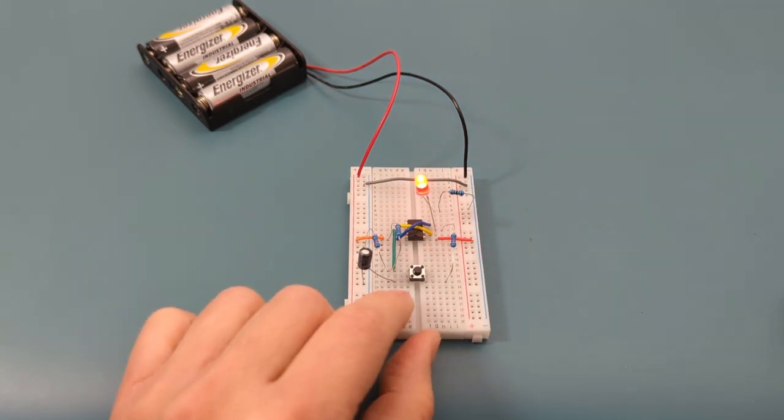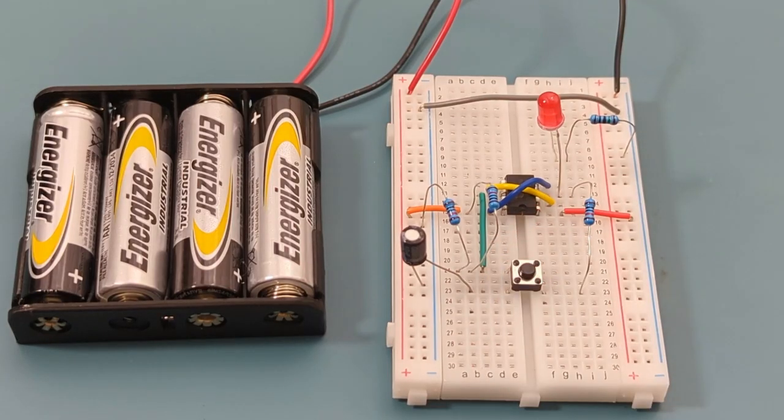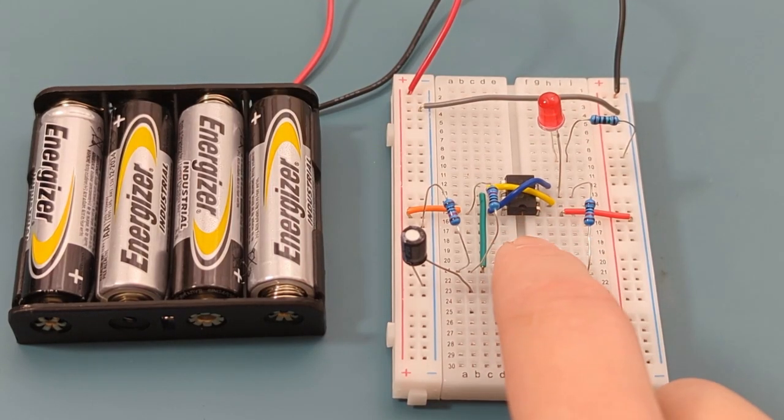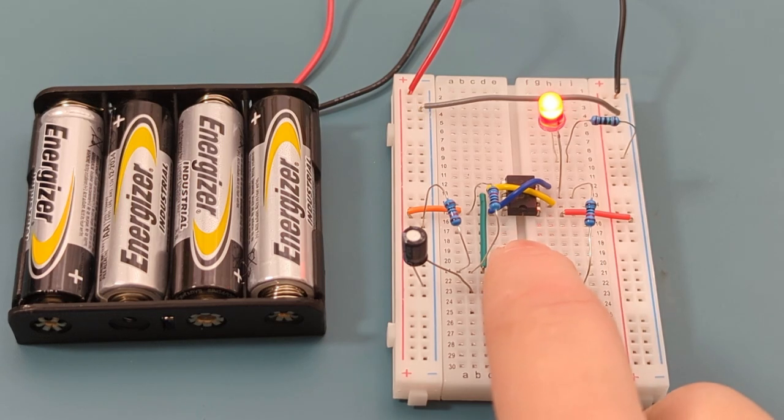The LED lights up, which is a good sign. If you press the switch, the LED turns off. If you press it again, the LED turns on. We have successfully completed the circuit.